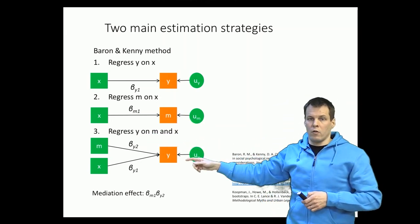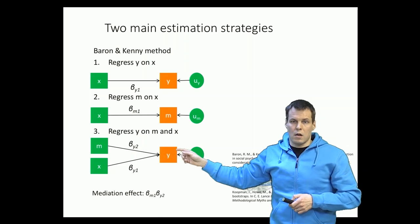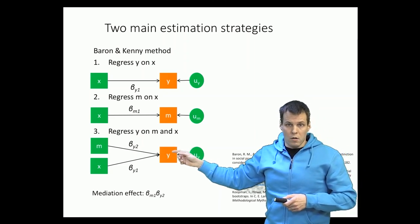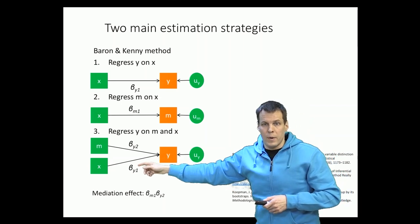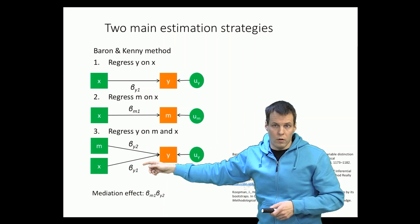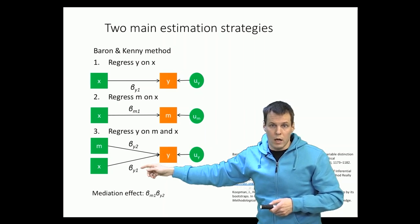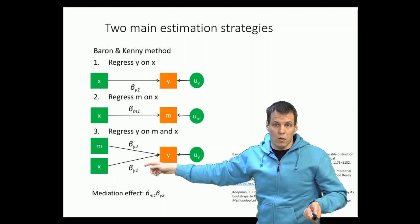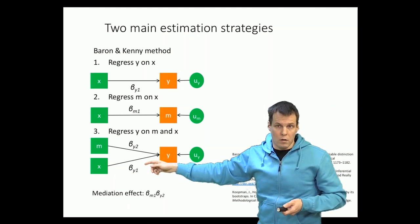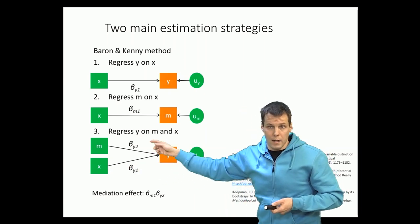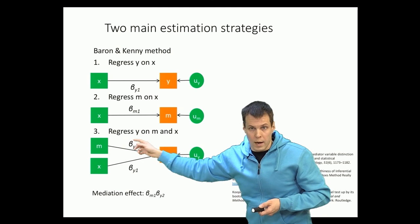Then we regress y on x and m, and that allows us to establish whether it's a full mediation or a partial mediation effect. So if β_y1 is non-significant, then we conclude that it's full mediation. If β_y1 is significant and substantially large, then we conclude that it is partial mediation. So there is a meaningful effect of x to y even if we control for the effect through m.